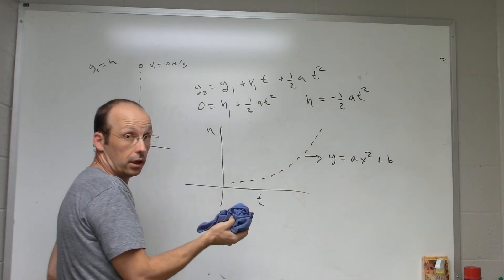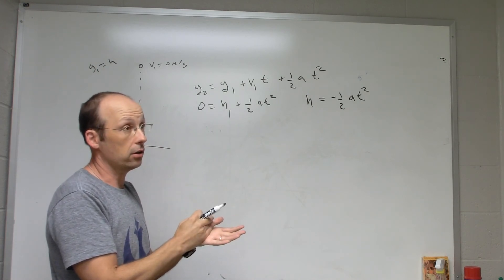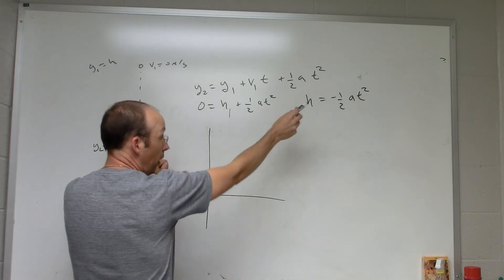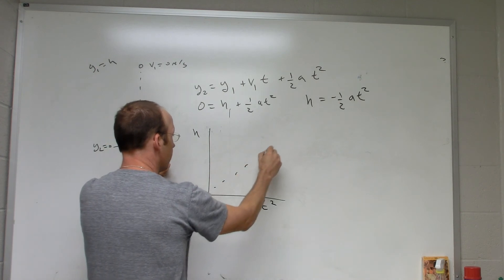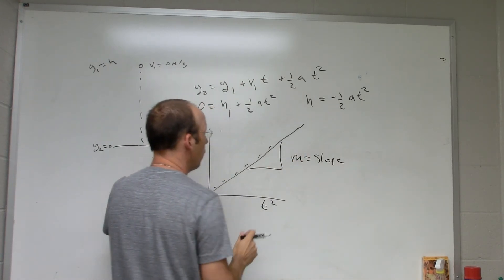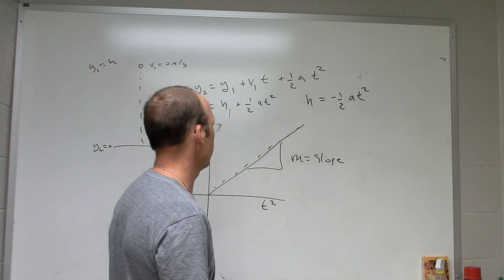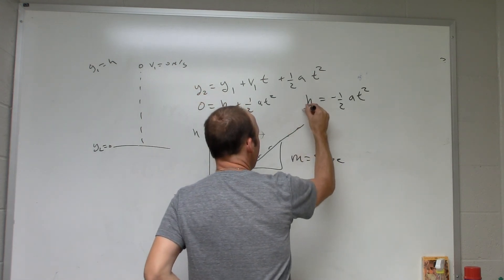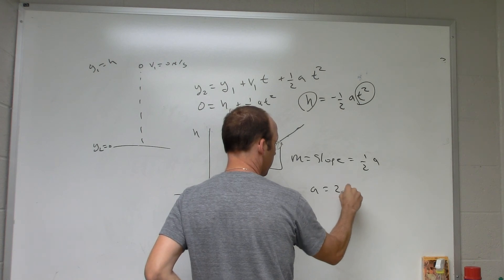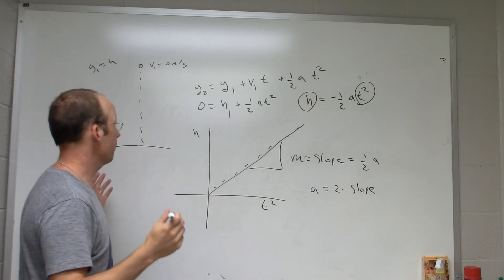What if you don't want to use a computer — for example, on a test? The only thing I can graph and analyze by hand is a straight line. So instead, plot h versus t squared. You calculate a t-squared column and plot h against it, and that should give a straight line. The slope of that line equals one-half a, so the acceleration equals two times the slope. This way you can find the acceleration using regular graph paper, no computer needed.